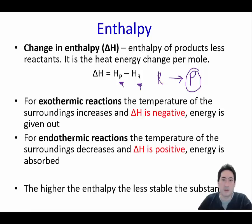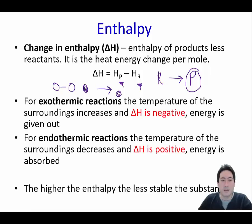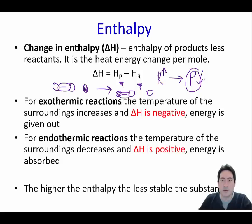For an exothermic reaction, the energy of the reactants is greater than that of the products. When you calculate products minus reactants, you get a low value minus a high value, so delta H will be negative. It's the opposite for endothermic reactions, where delta H will be positive.